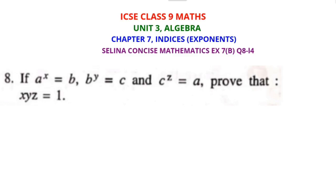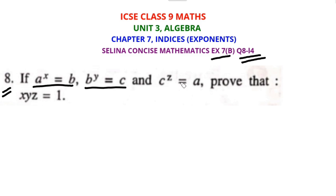Hello students, in continuation of the previous lecture, today we will solve Exercise 7B, question number 8 onwards. Here is question number 8 from Exercise 7B. Three relations are given: A raised to the power X equals B, B raised to the power Y equals C, and C raised to the power Z equals A. With the help of these, we have to prove XYZ equals 1.